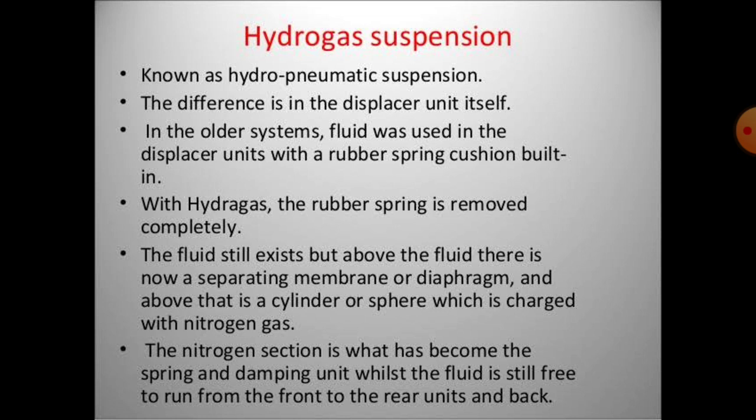Simple hydro-gas suspension, known as hydropneumatic suspension, differs in the displacer unit itself. In the older system, fluid was used in the displacer unit with a rubber spring cushion built in. With hydrogas suspension, the rubber spring is removed completely. The fluid still exists, but above it there is a separating membrane or diaphragm, and above that is a cylinder or sphere charged with nitrogen gas. The nitrogen section becomes the spring and damping unit while fluid runs between the front and rear units.